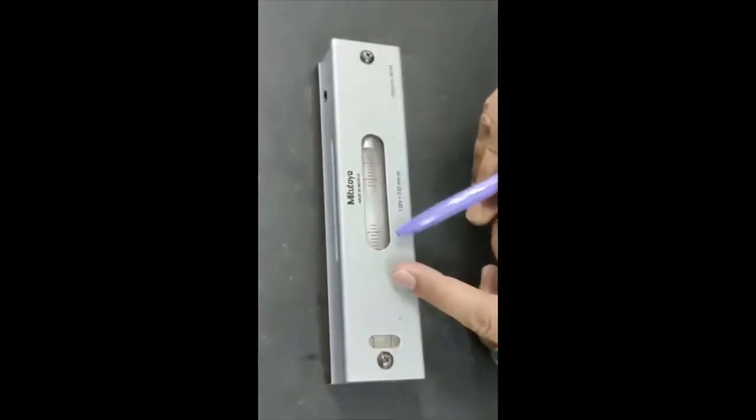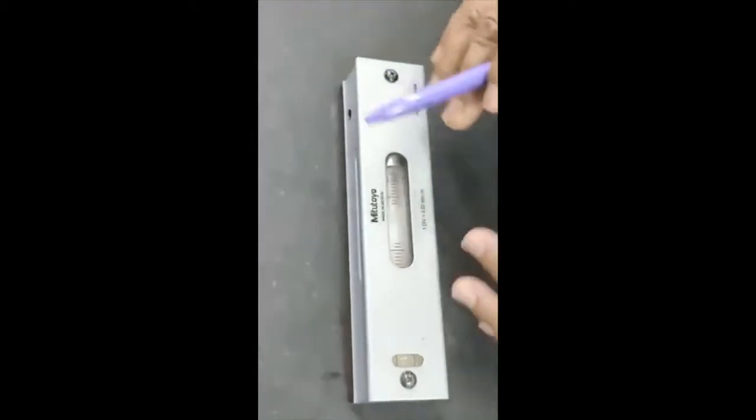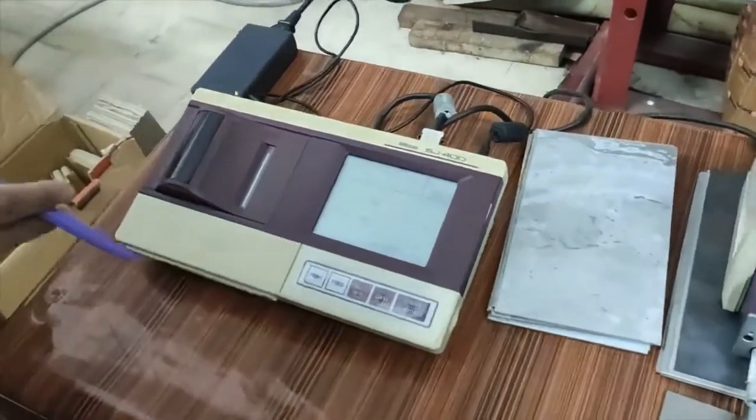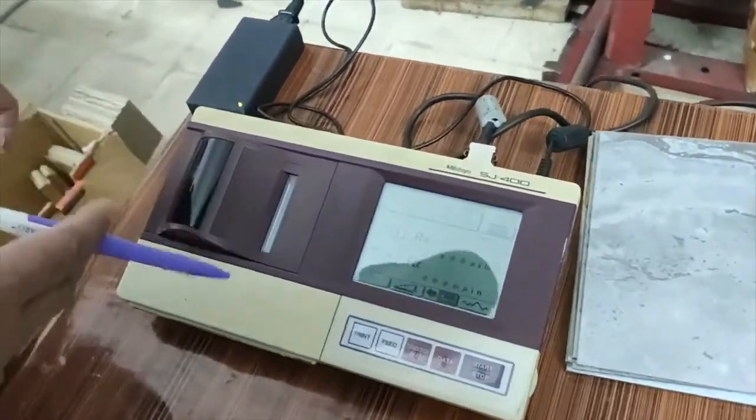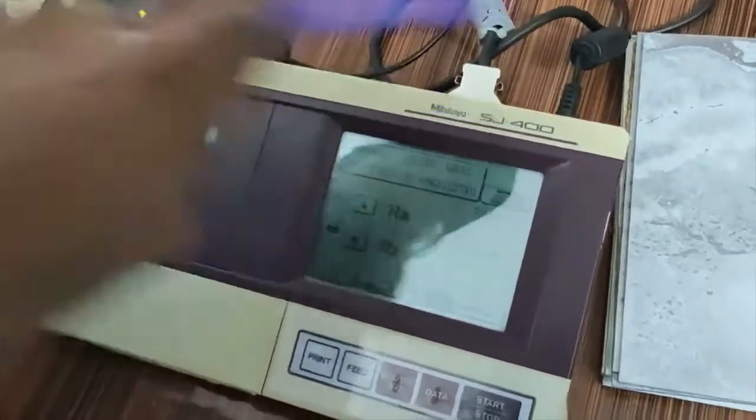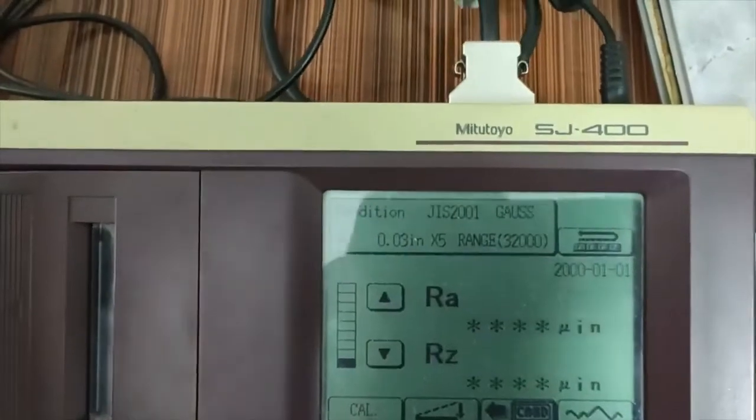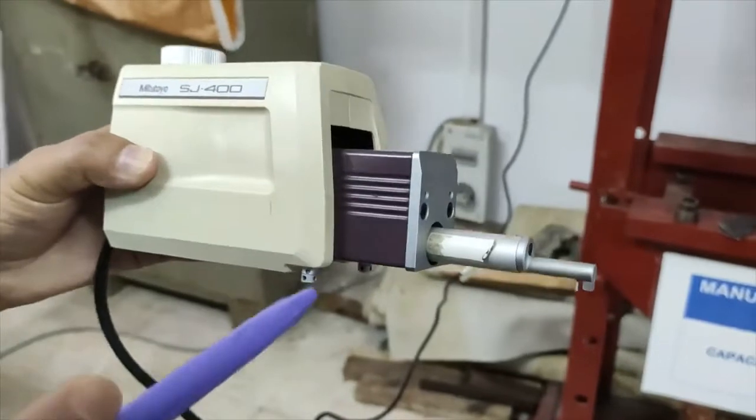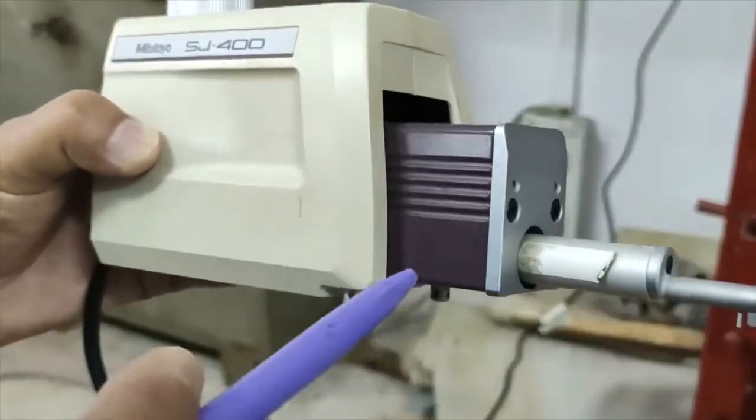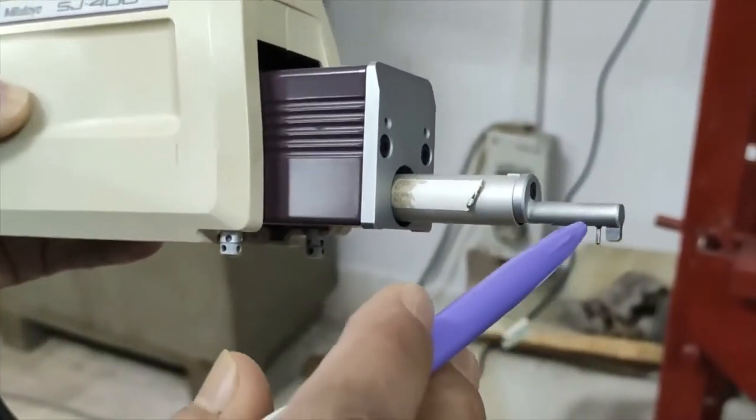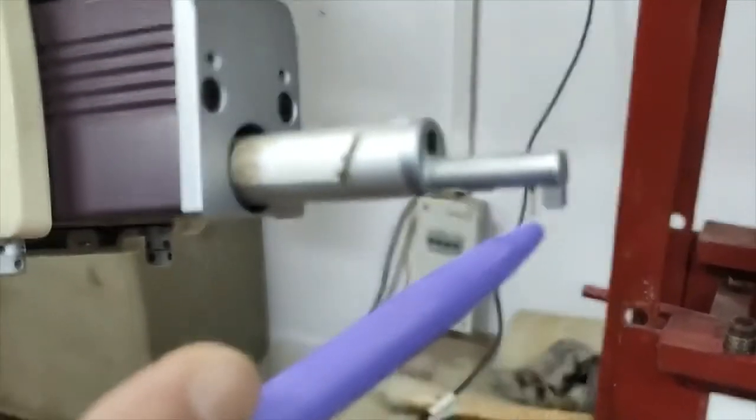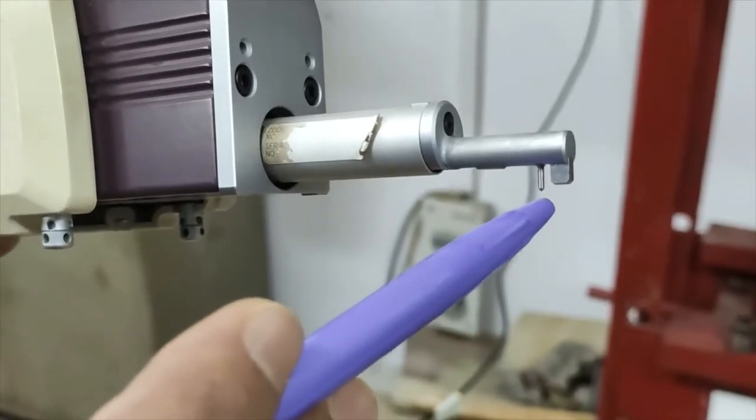Now come to surface roughness tester. We have a contact type surface roughness tester of Mitutoyo model SJ-400. In this tester you will have a stylus. In the stylus there is a small contact type diamond tip.